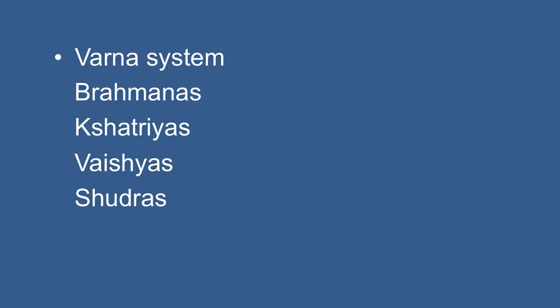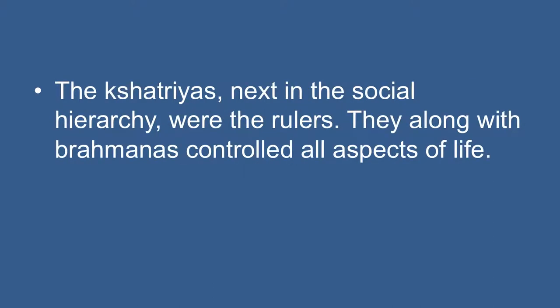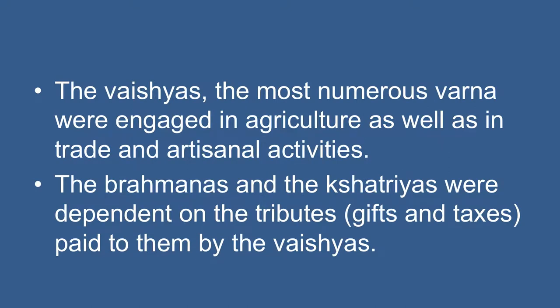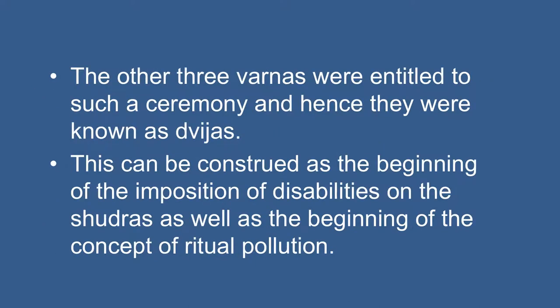The most important change was the rise and growth of social differentiation in the form of the Varna system. The four Varnas in which society came to be divided were the Brahmans, Kshatriyas, Vaishyas, and Shudras. The growing number of sacrifices and rituals made the Brahmans very powerful. The Kshatriyas, next in the social hierarchy, were the rulers. The Vaishyas, the most numerous Varna, were engaged in agriculture as well as in trade and artisanal activities. The Shudras, the fourth Varna, were at the bottom of the social hierarchy, ordained to serve the three upper Varnas. They were not entitled to the ritual of Upanayana sanskar, while the other three Varnas were known as Dwija, or twice-born. This can be considered the beginning of the imposition of disabilities on the Shudras and the concept of ritual pollution.